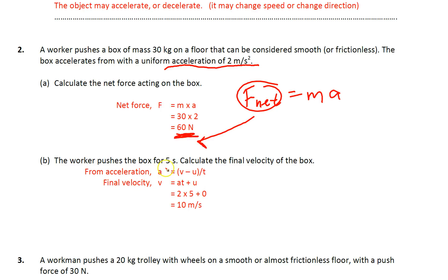The worker pushes the box for 5 seconds, calculate the final velocity of the box. So since we know the acceleration, we can actually use this formula, A equals to V minus U over T. As you all know, V is the final velocity, U is the starting velocity, T is the time.